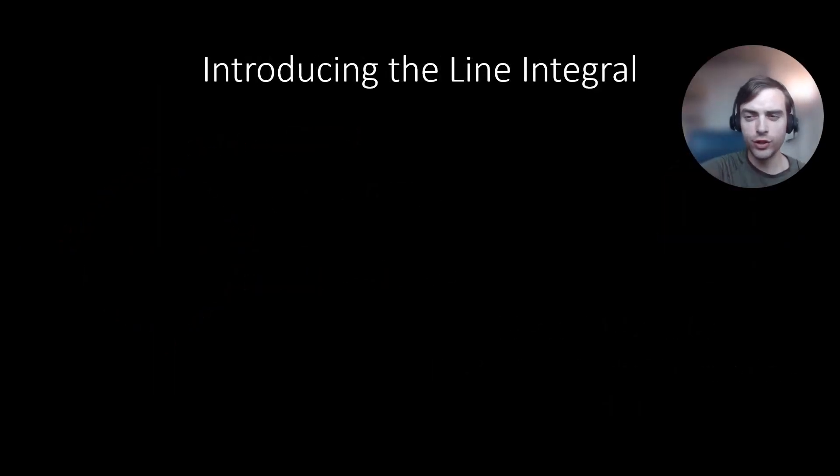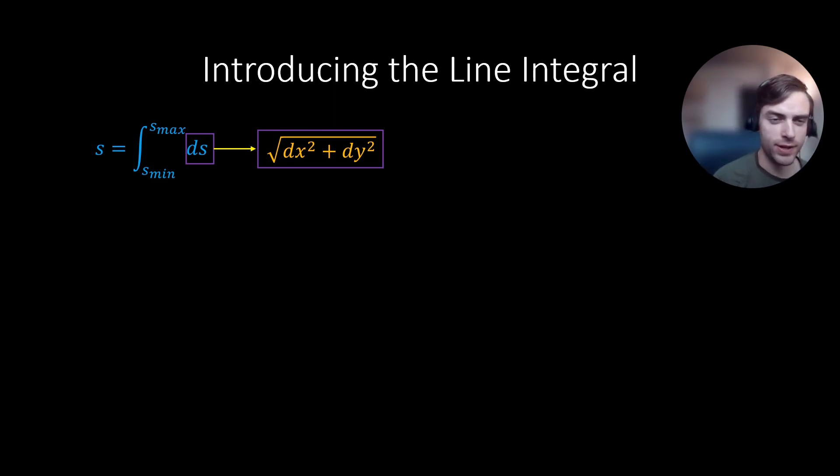So here we're going to quickly derive the equation for arc length of a curve in the xy plane. The arc length s is the integral from s_min to s_max of ds, where ds is the square root of dx squared plus dy squared. So that is a length differential in the xy plane. So there's the equation for s over there, expressed in terms of x this time.